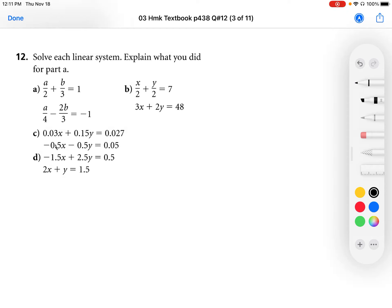To solve C, we're going to set up the equations. So I'm going to write out C here. 0.03x plus 0.15y equals 0.027. Now this isn't any different from any other equation, it's just got decimals in it.